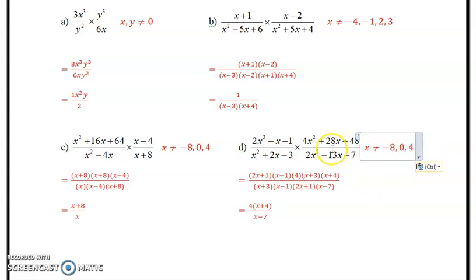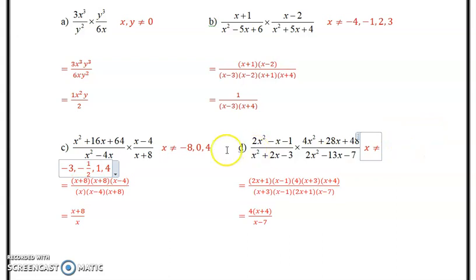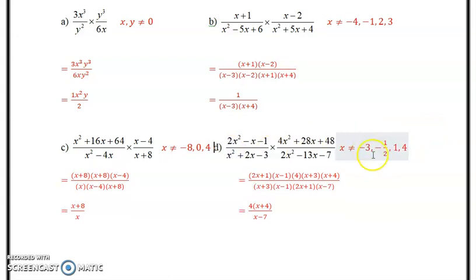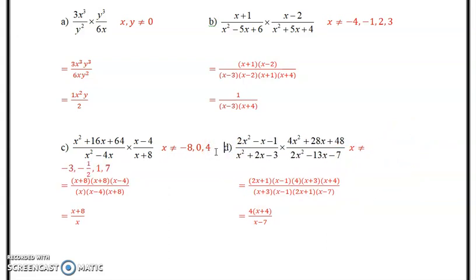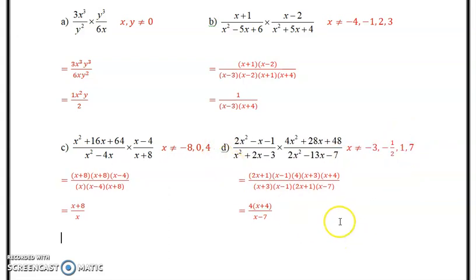Don't forget about your restrictions. And I'll forget about these sometimes, and I do apologize. So remember, restrictions on the original. So it's going to be negative 3. It's going to be positive 1. It's going to be negative 1 half. So this is the space here. And then positive 7. So those are the four values of x that will not satisfy this. There we are.